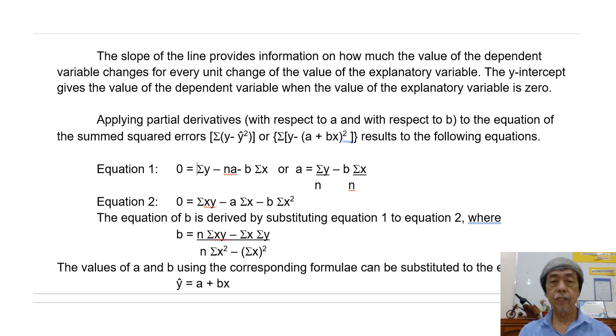Applying partial derivatives with respect to A and with respect to B to the equation of the sum squared errors results in the following equations, which are actually the equations for A and B. The values of A and B using the corresponding formulae can be substituted to the equation y-carat equals A plus Bx.